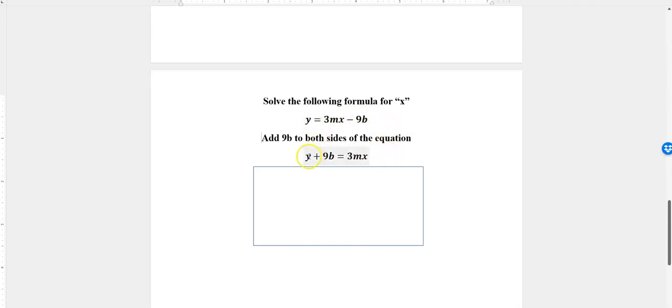Would it be wrong to say 9b plus y? No, but I just didn't do it that way. It doesn't matter—the commutative property says you can write those in any order that you want.